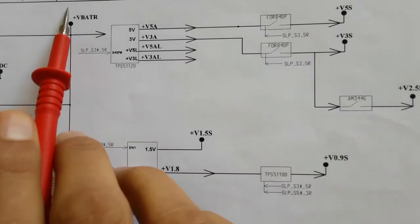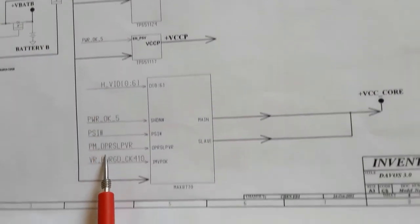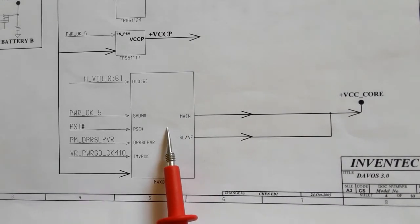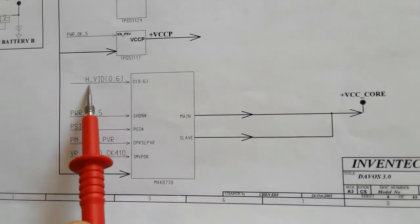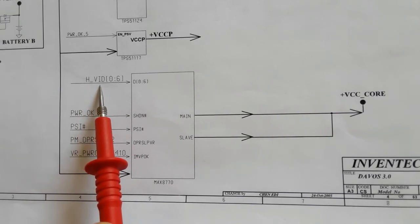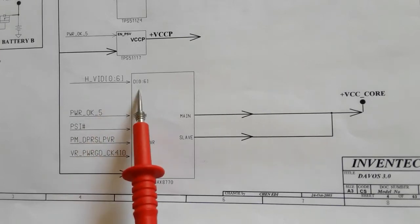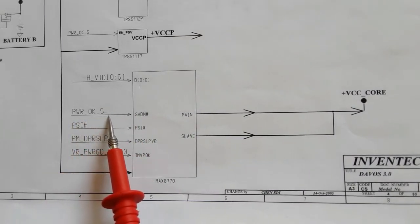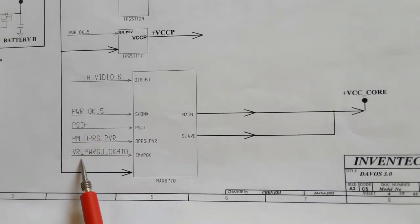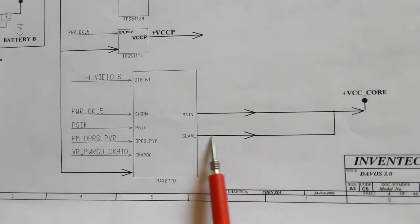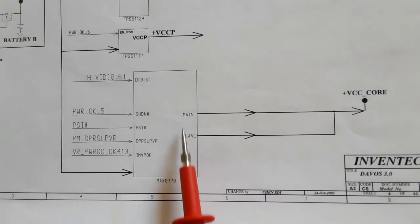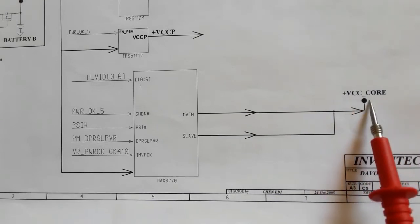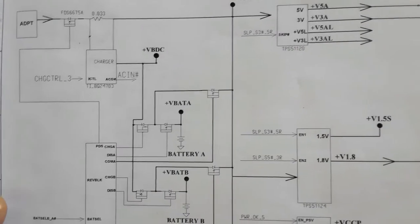The plus VBAT will also go directly to the power management IC for the CPU, the MAX8770. This is the CPU power management IC. Here we have many enable signals and ID signals — about eight signals — based on which the IC will know the specific voltage for the CPU. There are also other signals: power okay, PSI, and power management. After receiving VBAT, the enable signals, and the IDs, the IC will generate the VCC core through two channels — a main channel and a slave channel — and we will get plus VCC core.